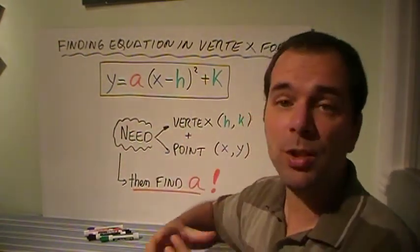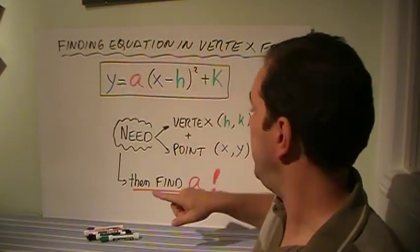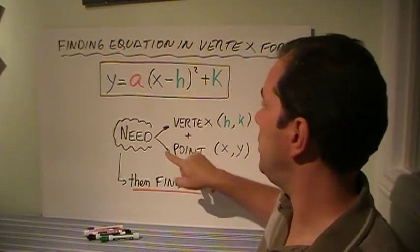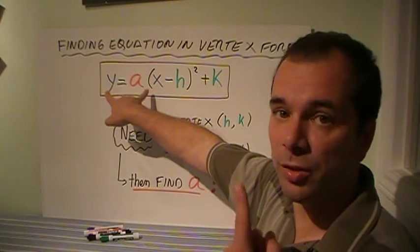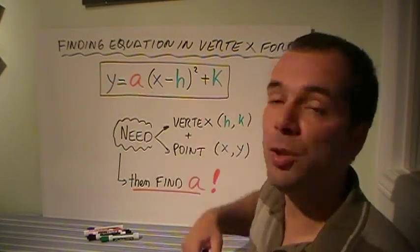So what you need is, first, you need the equation with all the variables, and then you need the vertex so you can get the h and the k, and a point so you can get the x and the y for just one point. Having everything except for the a, that's what you can find out.